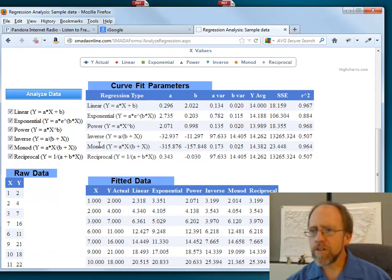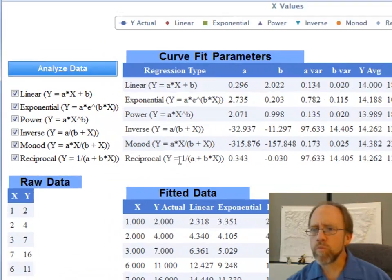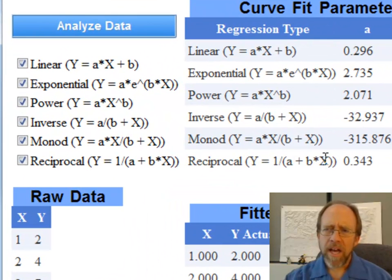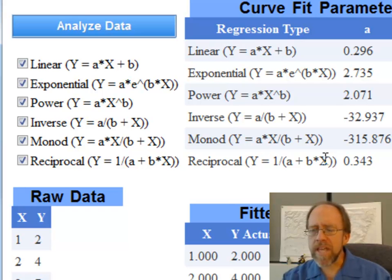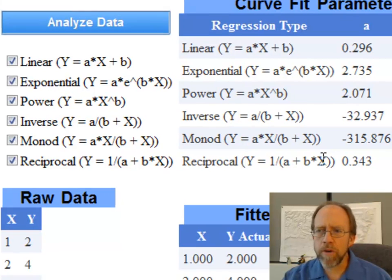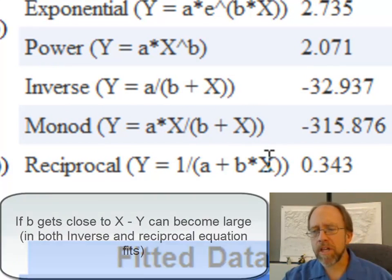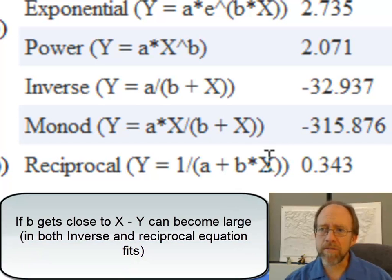Well, if you look at those equations, the inverse equation, y equals a over b plus x, and reciprocal, which is y equals 1 over a plus bx, the best fit for those specific curves does that. Because it's a number, and the b, and there's a b plus bx in the bottom, as the b plus x value gets very, very small, depending upon the value of b, that number can get very large, positive or negative. Same thing with the reciprocal there.